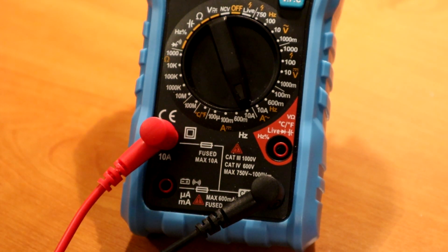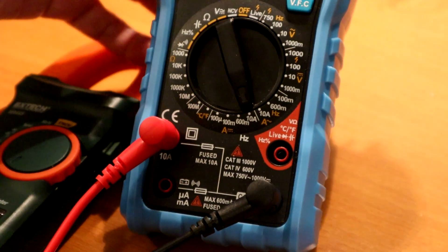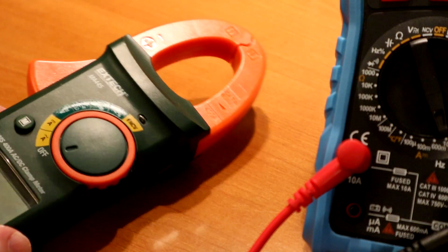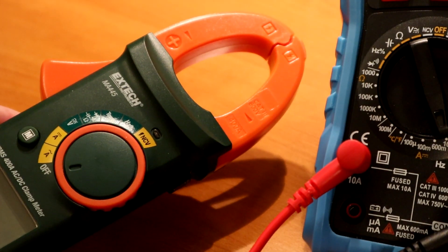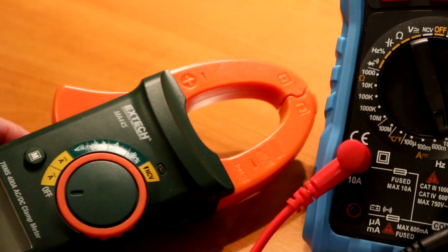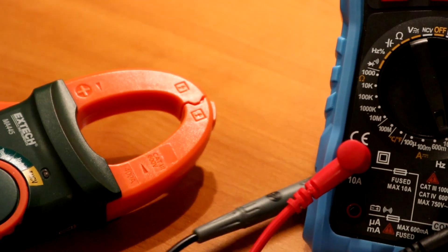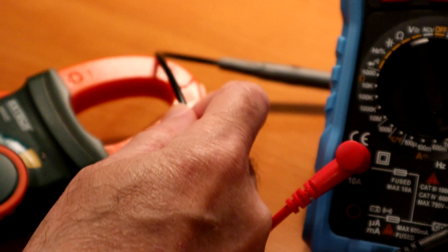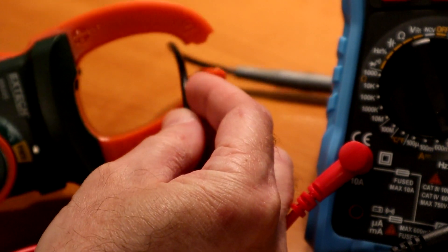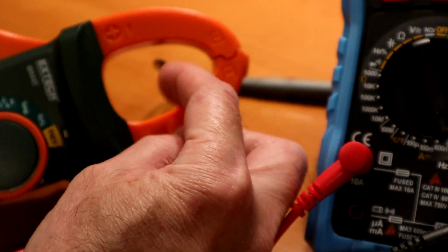Now there is an alternative to that and I've used it with automobiles and that is one of these. So this is a so-called clamp meter and you can basically have a wire, say, like this,